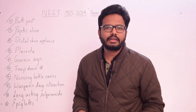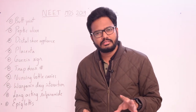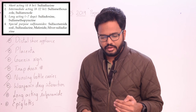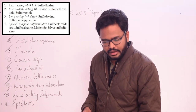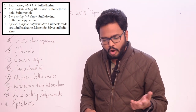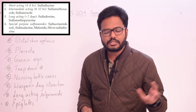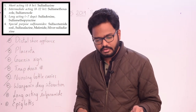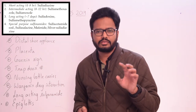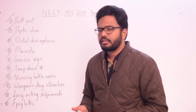Coming to long-acting sulfonamides: the classification based on duration of action is as follows — short-acting (4–8 hours): sulfadiazine; intermediate-acting (8–12 hours): sulfamethoxazole and sulfamoxole; long-acting (around 7 days): sulfadoxine and sulfametopyrazine. Special purpose sulfonamides include sulfacetamide sodium, sulfasalazine, mafenide, and silver sulfadiazine.